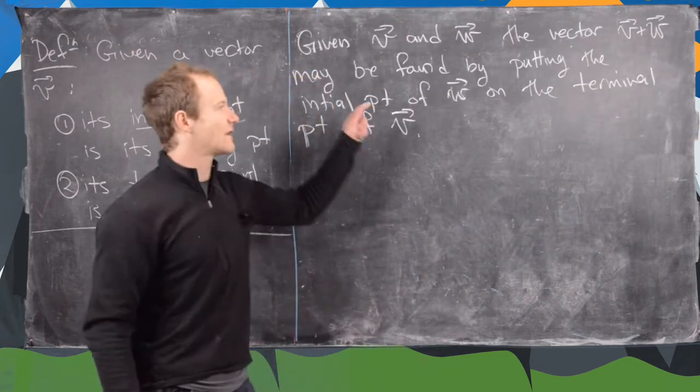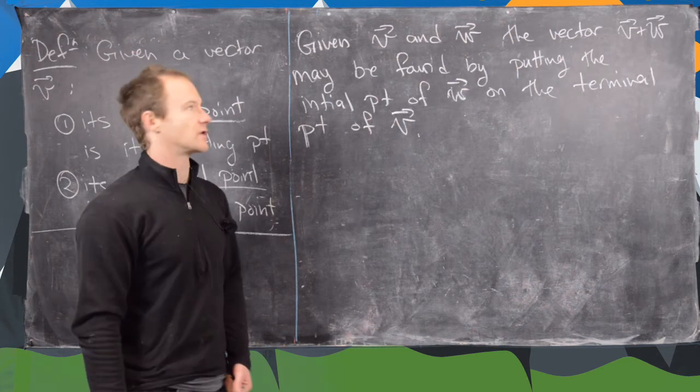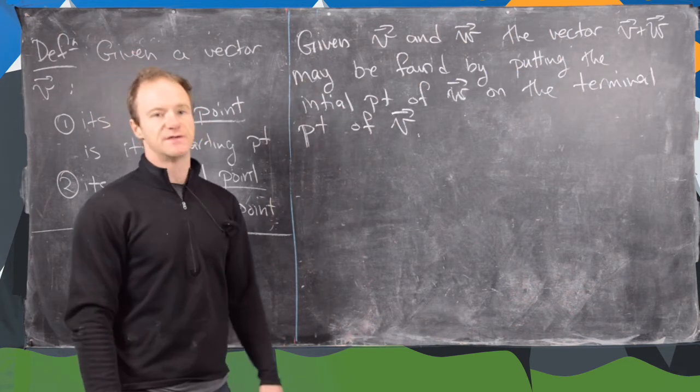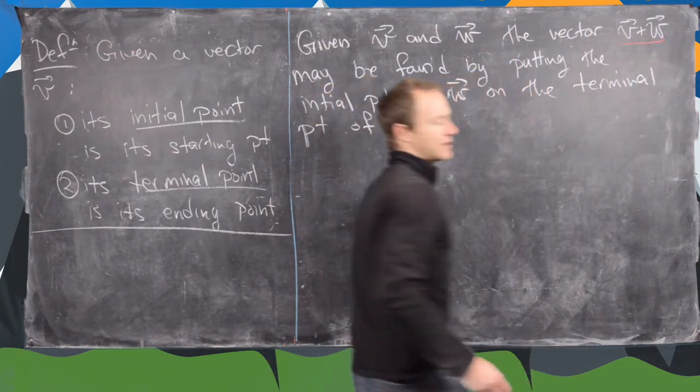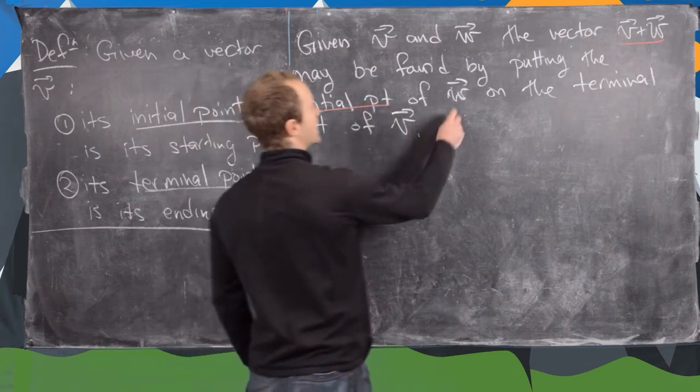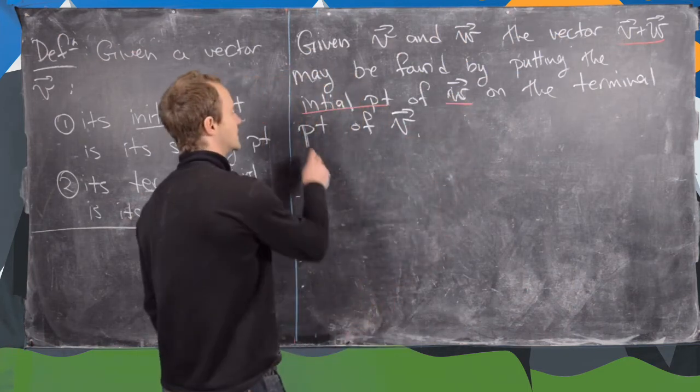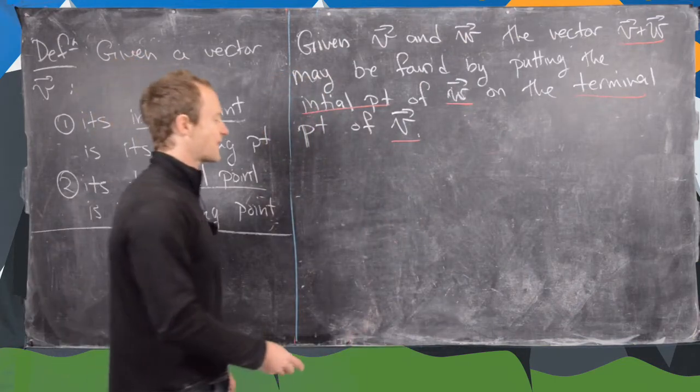Now let's look at vector addition, and we're going to do this in a very graphical way first. So given two vectors, V and W, the vector V plus W may be found by putting the initial point of W on the terminal point of V. So let's see what that looks like.